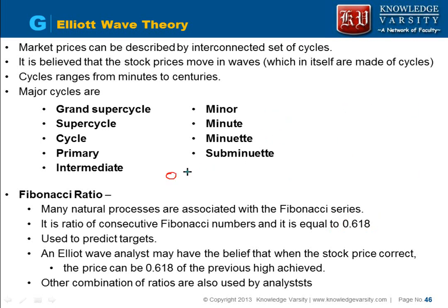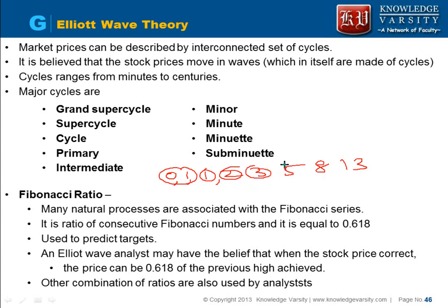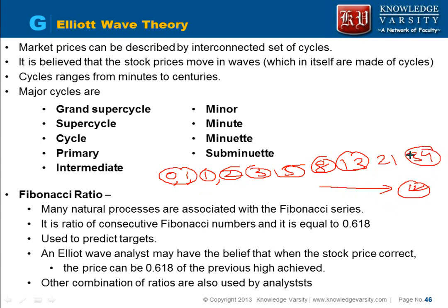The Fibonacci sequence is: 0, 1, 1, 2, 3, 5, 8, 13, 21, 34, and so on. Each next number is obtained by adding the previous two: 0+1=1, 1+1=2, 1+2=3, 2+3=5, 3+5=8, 5+8=13, and so on. If you take terms far along in the series, the ratio of consecutive terms comes to roughly 0.618.